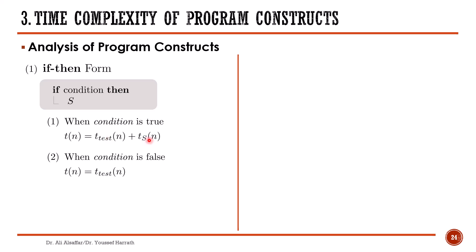For the condition, it is possible that it consists of a complex statement with many operations such as addition, subtraction, multiplication, and division, but all of these operations will be ignored and the condition will be considered as one comparison statement requiring one unit of time. The statement itself may also consist of another if-else, a single if, or a loop, and we need to analyze it to find its time complexity. If the condition is false, then the time complexity will be only the time spent executing the condition, which is equal to one.